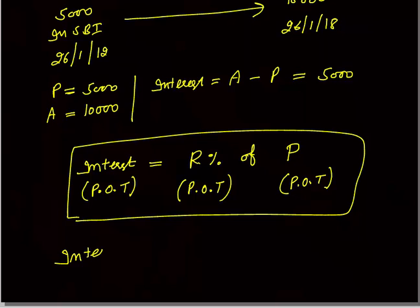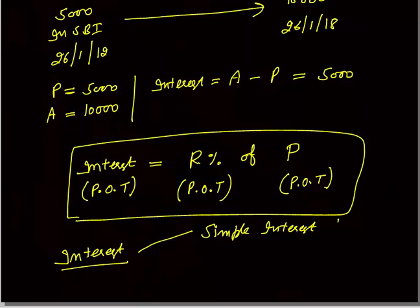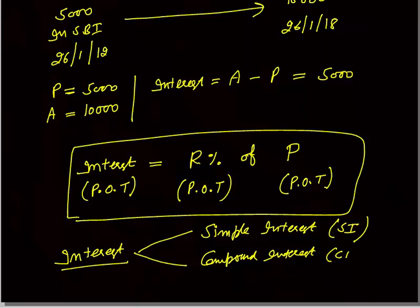Interests are of two types. One is called Simple Interest, short form SI. The other is Compound Interest, short form CI. I will discuss them one by one — first, simple interest.